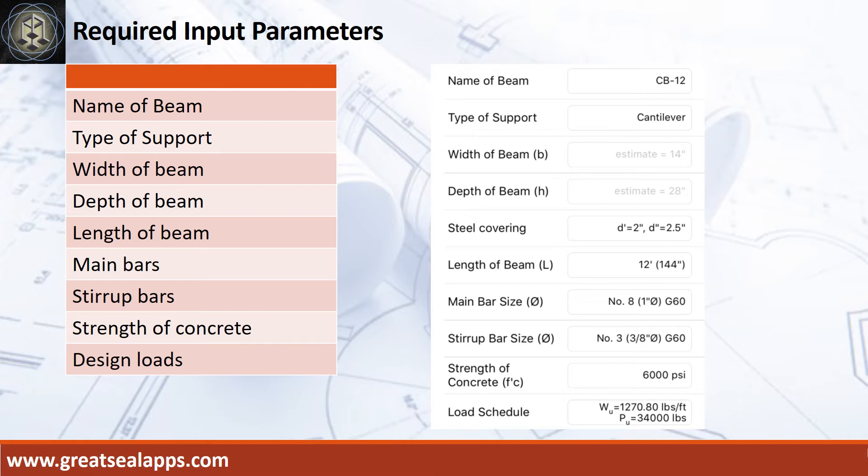Main bars are 1 inch diameter at grade 60. Stirrup bars are 3/8 inch diameter at grade 60. Strength of concrete is 6,000 psi. Factored uniform load is 1,270.8 pounds per foot, and factored concentrated load is 34,000 pounds.